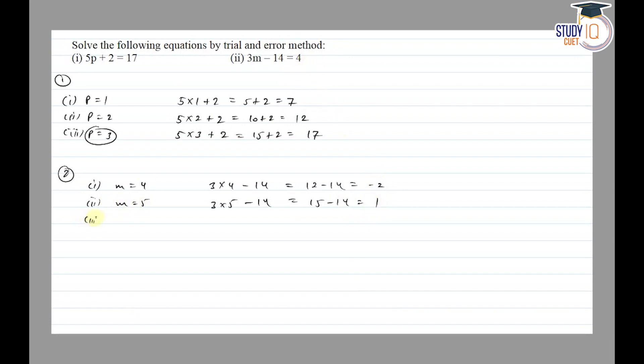Then m equals 6. So 3 into 6 minus 14 is equal to, 3 times 6 is 18, minus 14 is equal to 4. So 4 is equal to 4, LHS is equal to RHS. So m equals 6